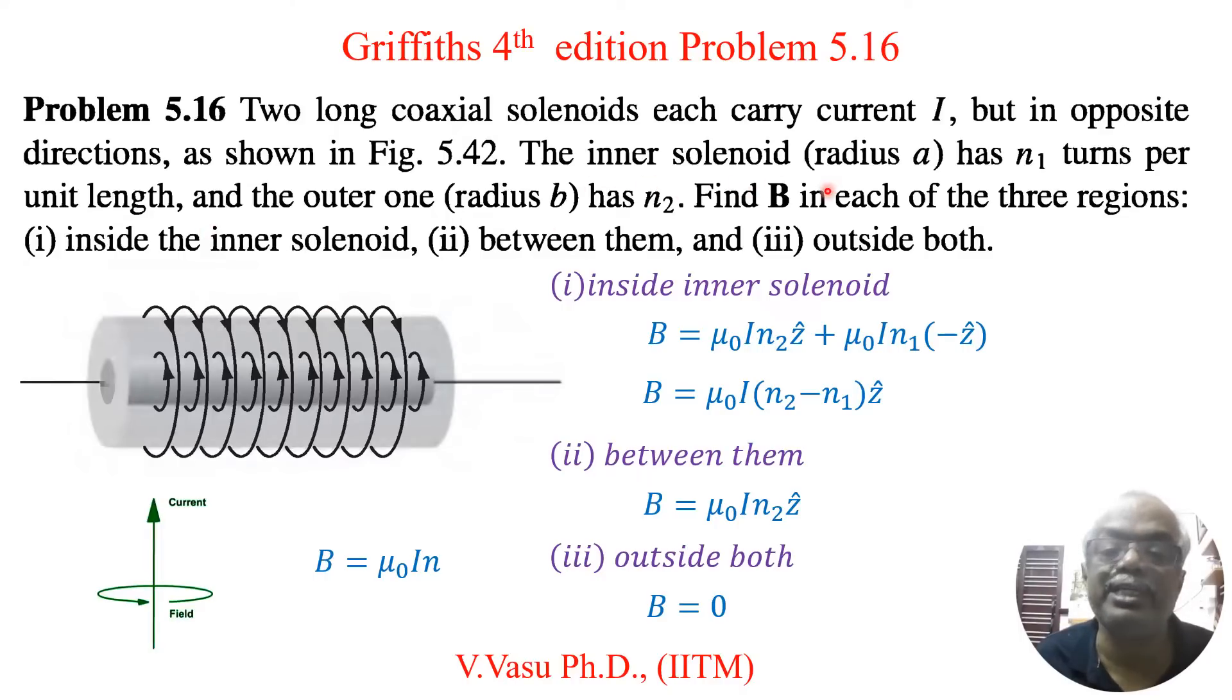The inner solenoid radius a has N1 turns per unit length. That is this inner solenoid, radius of inner solenoid is a and the number of turns is N1.